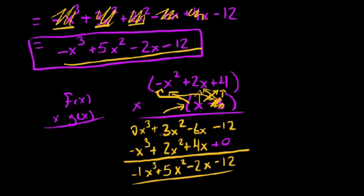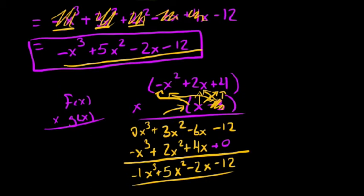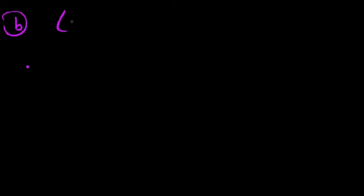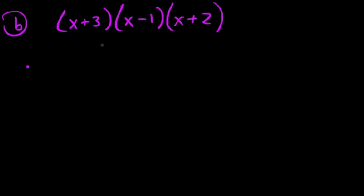A lot of times it's a matter of preference, or you've been asked to do it one way or the other. Before we wrap up, I'd like to do one more example. In this example, we're going to multiply three binomials together — something you might commonly see. We'll use x plus 3, x minus 1, and x plus 2. The method is to start by multiplying together the first two binomials.